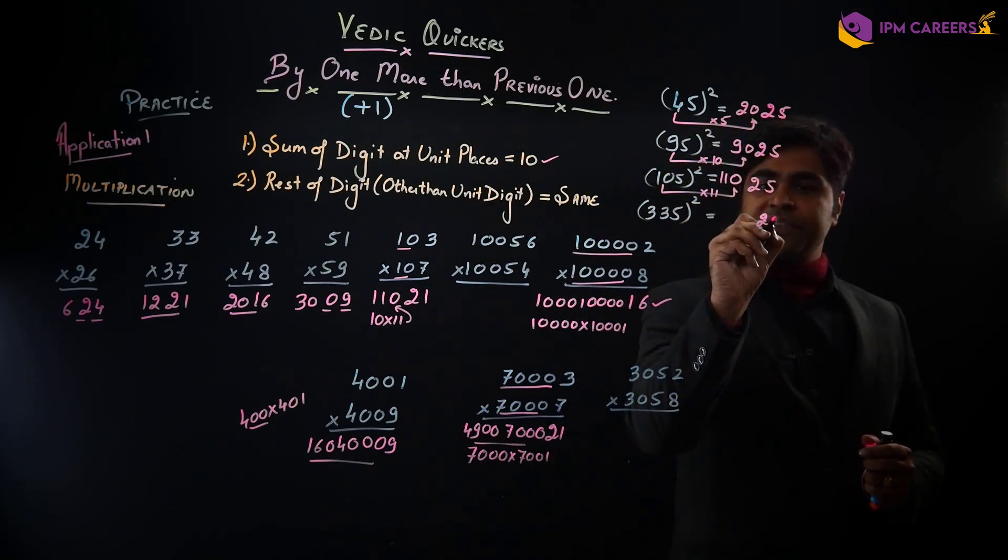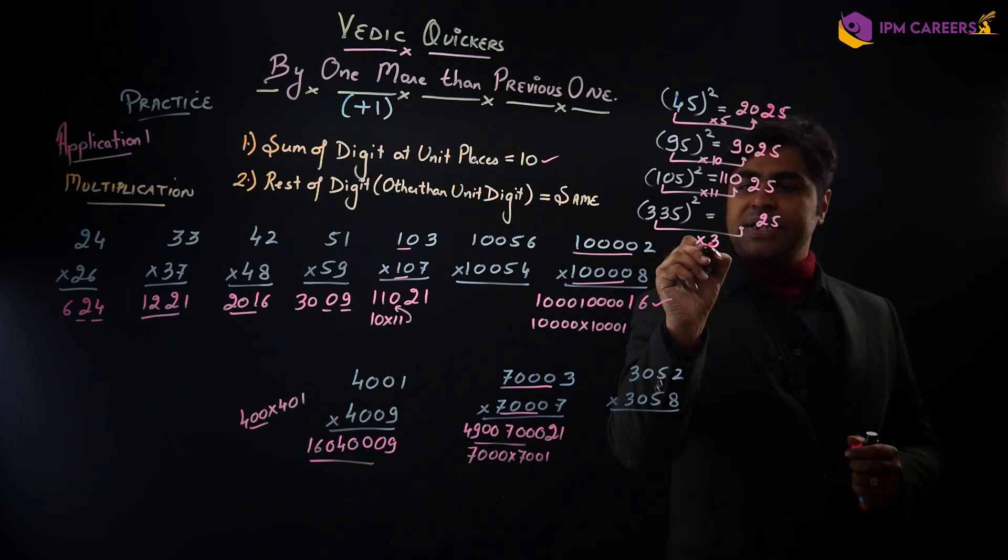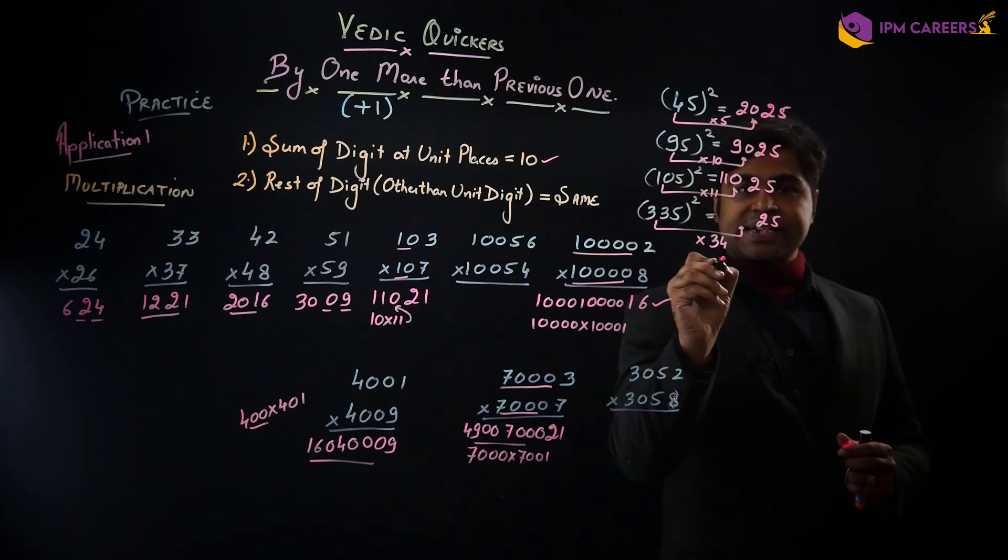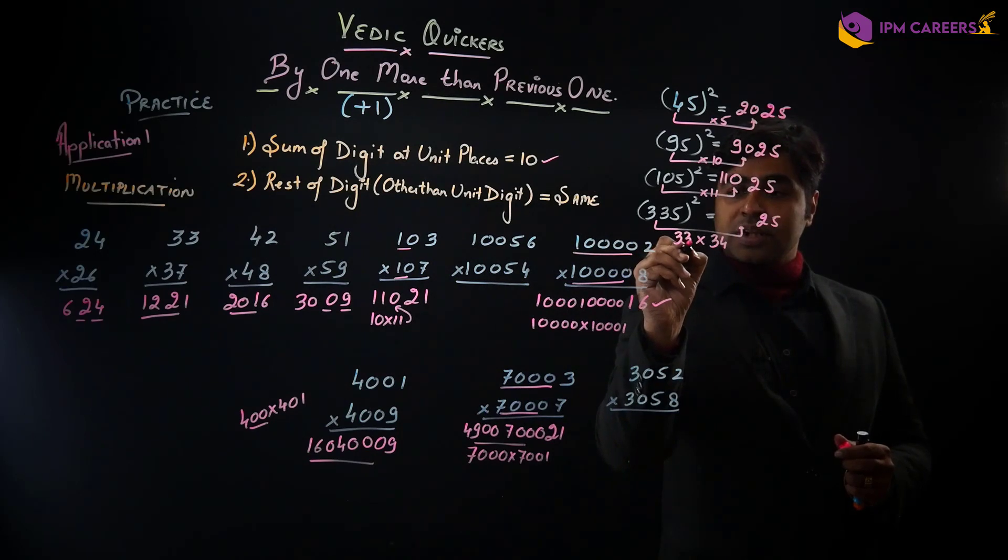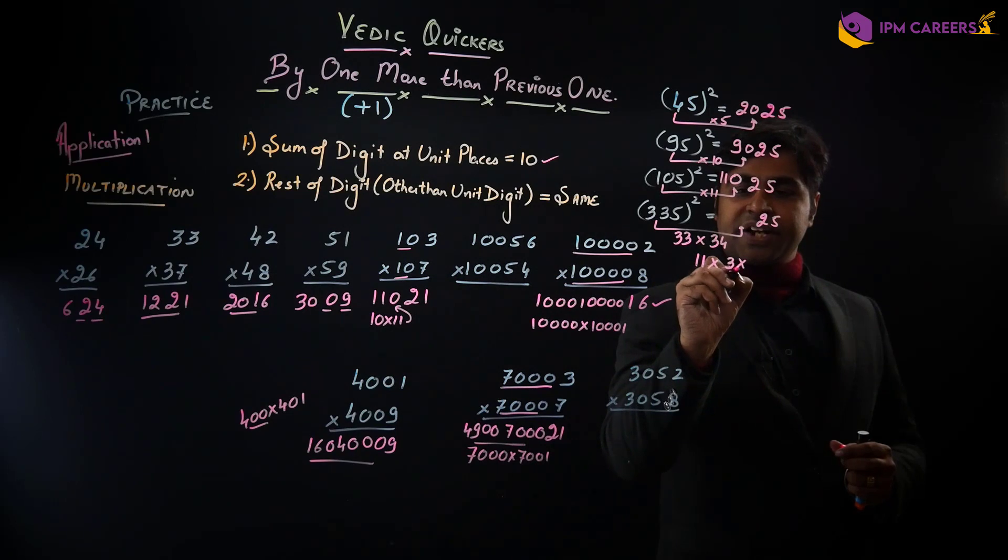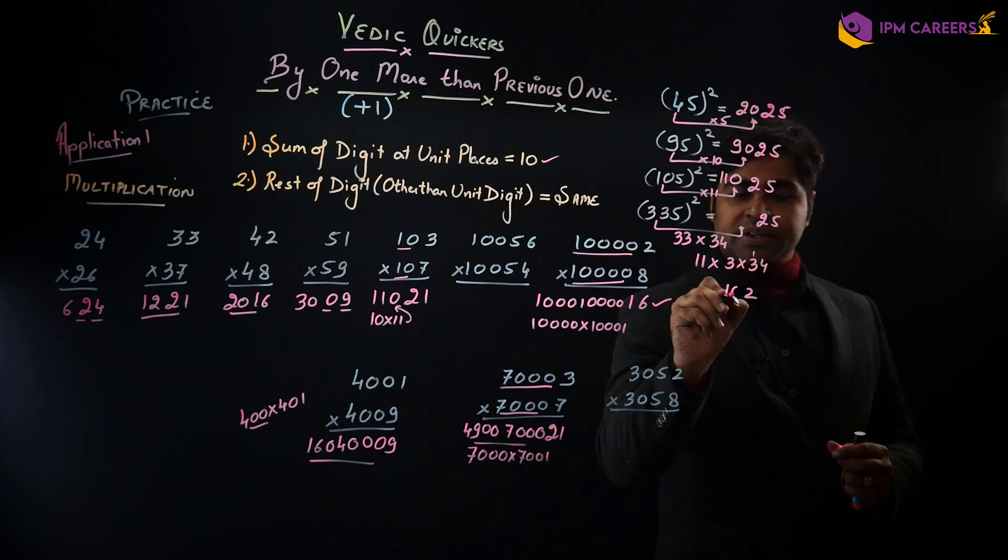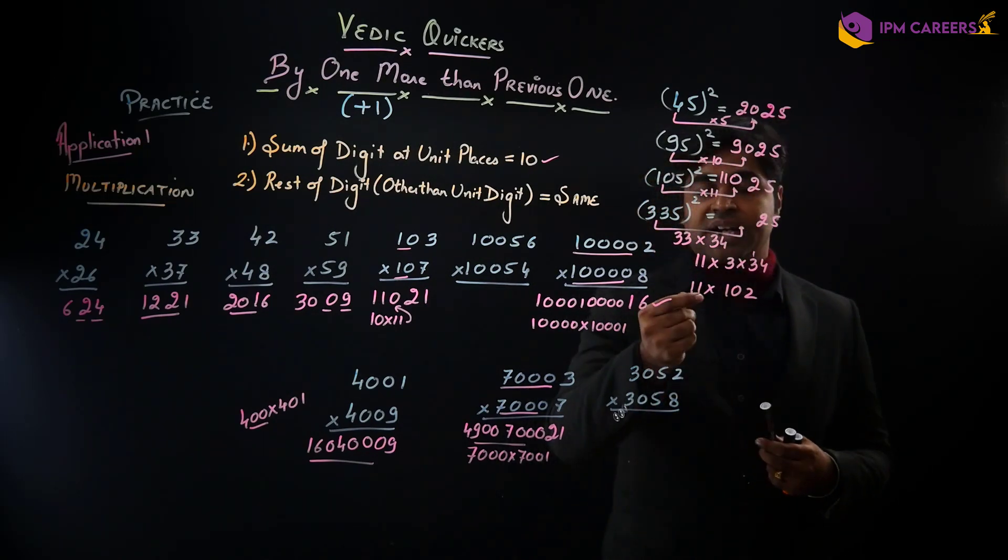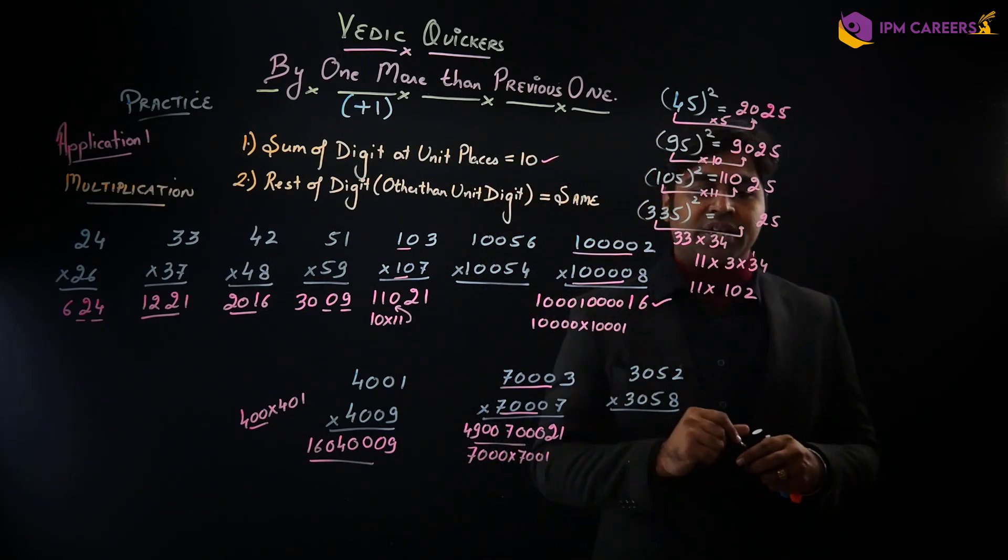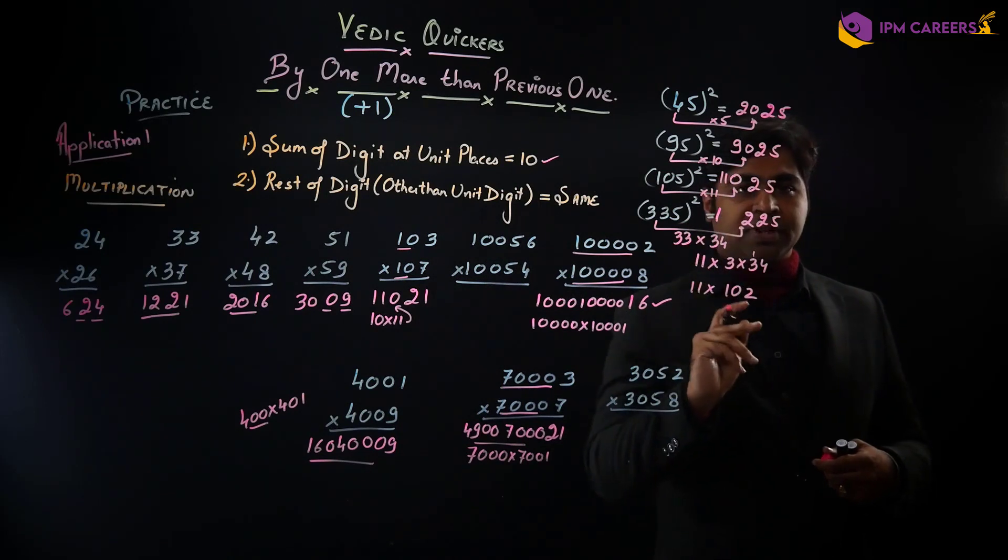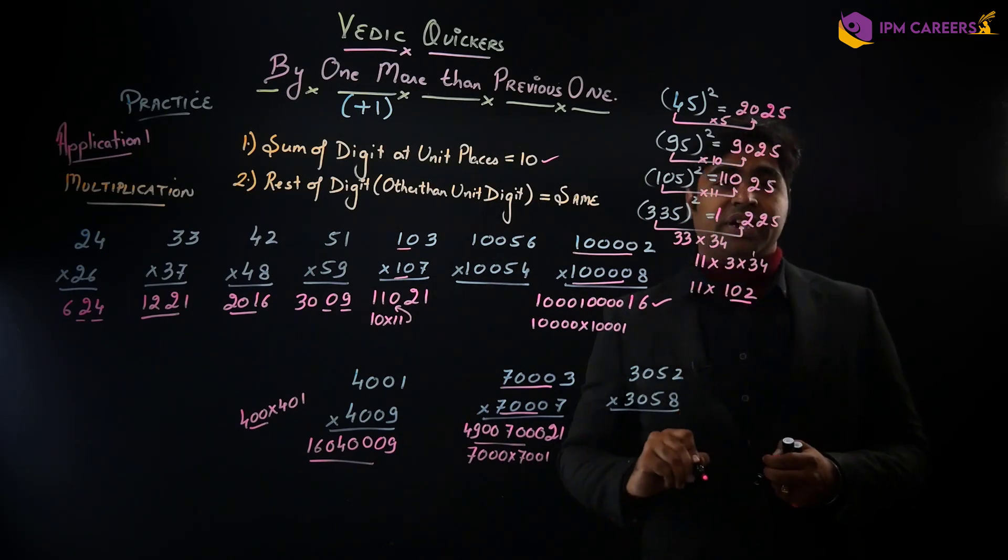5 ka square 25. 10 ka next number is 11, 11 into 10, 1, 1, 0, 2, 5. 5 ka square 25. 33 ka with the next number 34 would be your answer. Now 33 into 34, how do you do it? 33 into 3, so this will be 11 into 3 into 34. 4, 3s are 12, 3, 3s are 9 plus 1, 10. So 11 into 102 karne ka tarika, 11 ka kisi bhi number se multiply karne ka tarika hum already nikal chuke hain, which is.